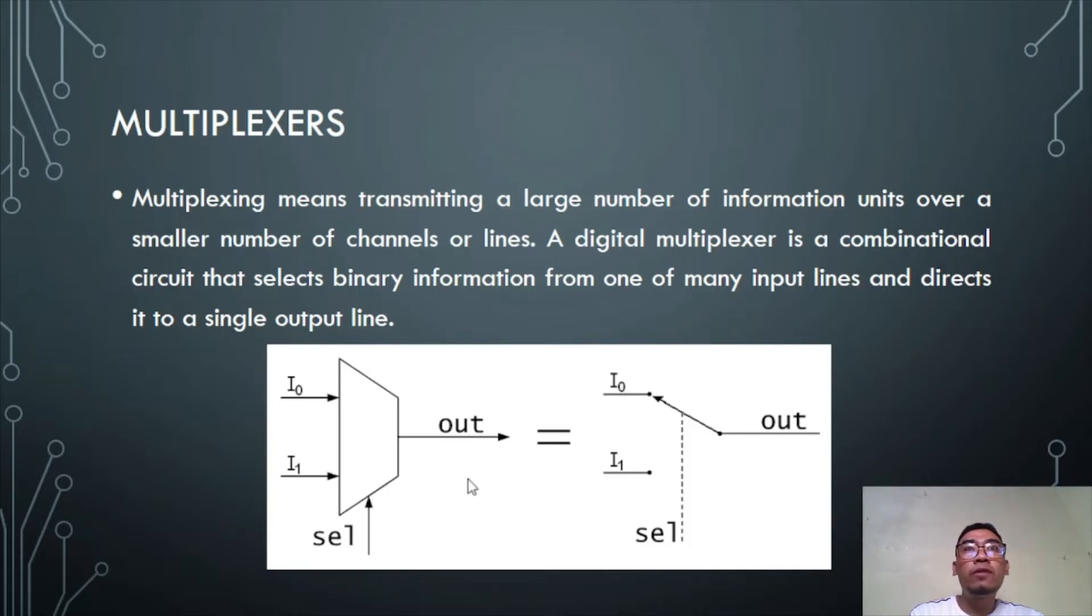The operation of the multiplexer can be understood with the help of the second figure. When the select pin is at logic low or zero, input I0 will be connected to the output.